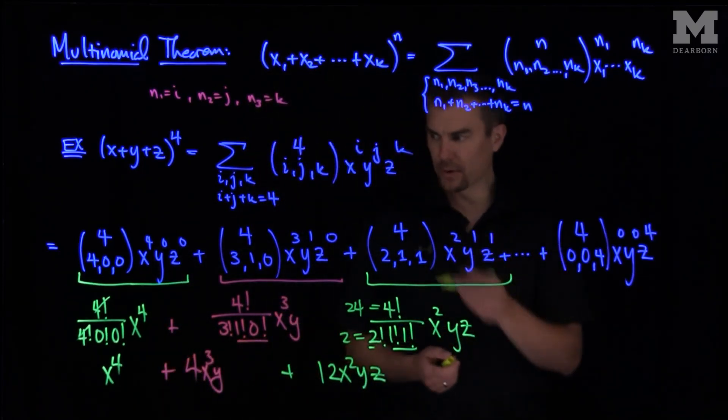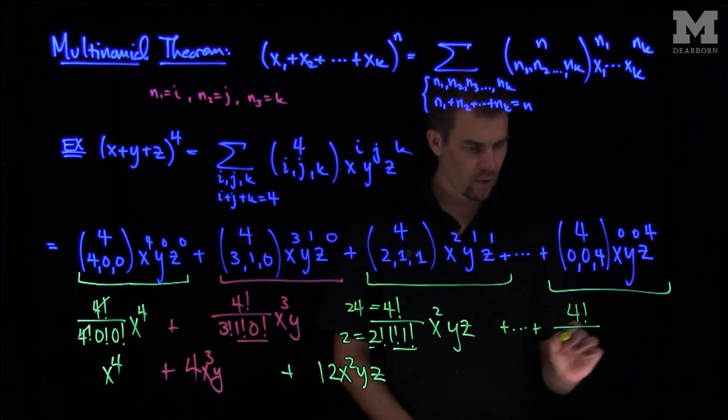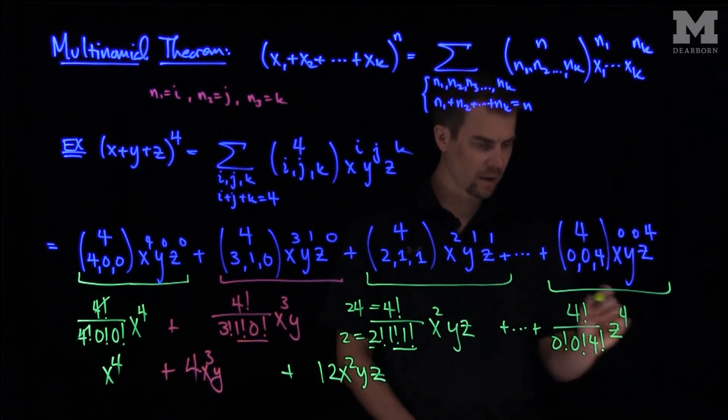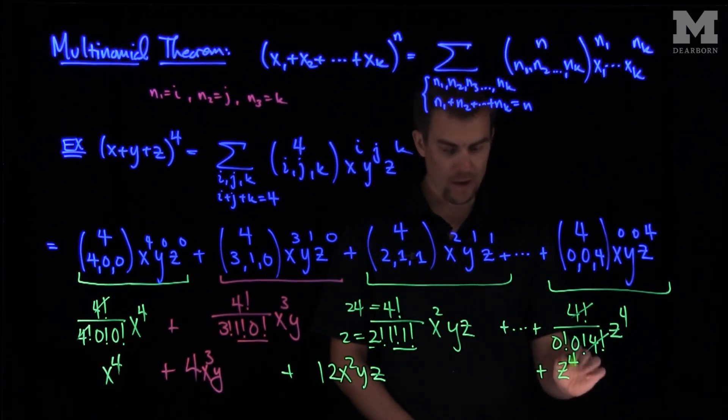And let's look at this last one. Similar to the first calculation, what we're going to see over here is we're going to have 4! over 0!0!4!, z⁴. And what I have here is that's just going to be a one, because the four factorials will cancel, and the zero factorial is equal to one. So this will be a z⁴.